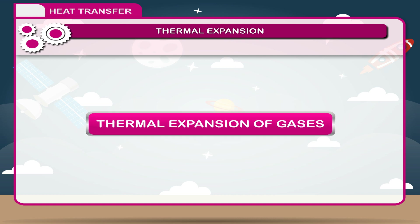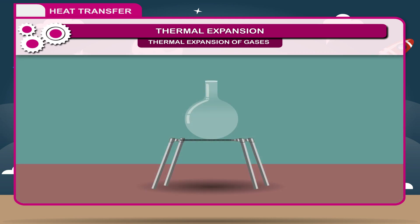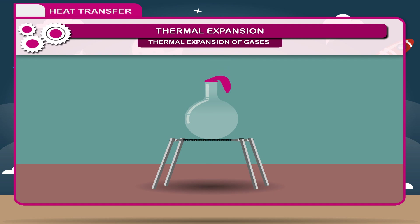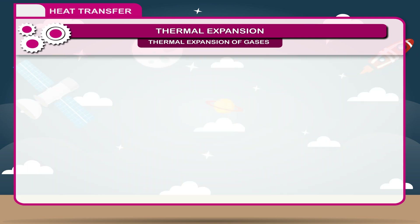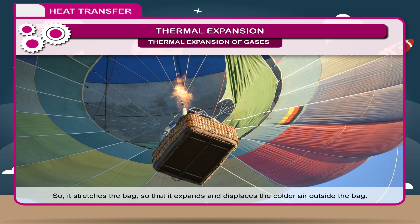Thermal expansion of gases: Expansion in gases is maximum compared to solids or liquids because the molecules in a gas are very loosely packed. On heating a gas, the molecules move far away from one another, and the gas tends to increase its volume. Activity: Take an empty flask and fix a balloon to its neck. Heat the flask using a burner and observe the balloon. After some time, the balloon gets inflated. Now leave the flask to cool down — the balloon gets deflated. This shows that gases expand on heating. An interesting example of expansion of gases is the hot air balloon, where hot air inside the balloon bag expands more quickly than the outside air, stretching the bag so it expands and displaces the colder air outside.